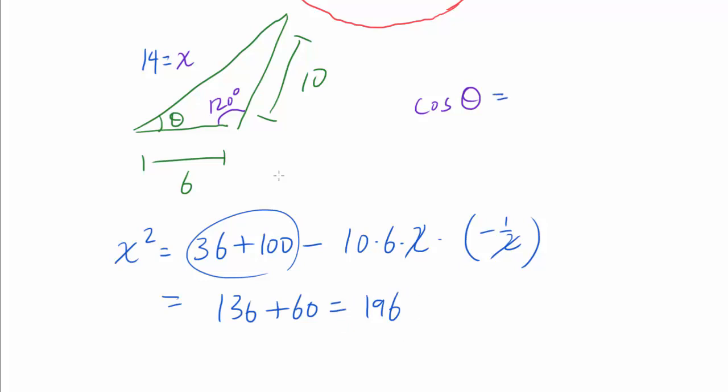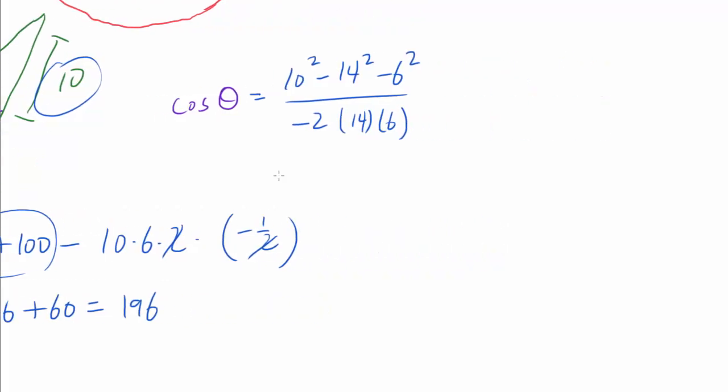Now cosine of theta. Applying law of cosines once again, but this time focusing on our theta and 10 as opposite side and angle. Cosine of theta is going to be 10 squared minus 14 squared minus 6 squared, over 2 times 14 times 6. And this is going to be 100 minus 196 minus 36, over negative 2 times 14 times 6.